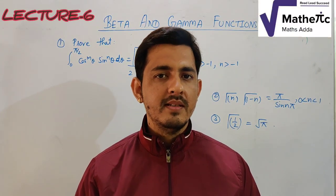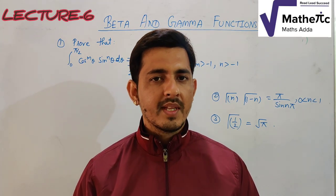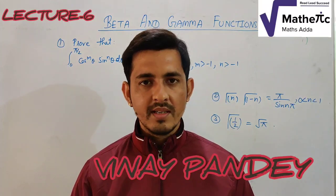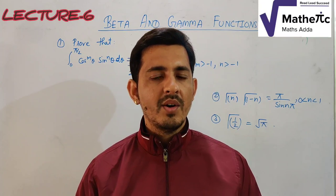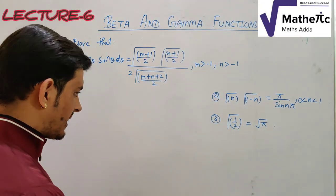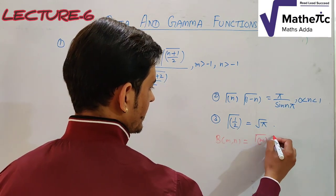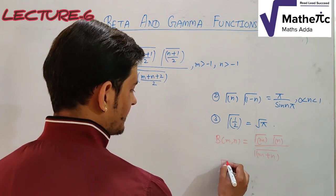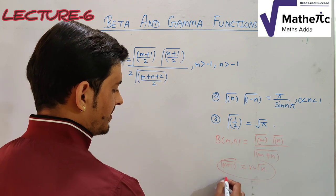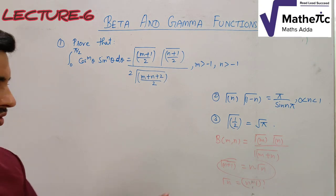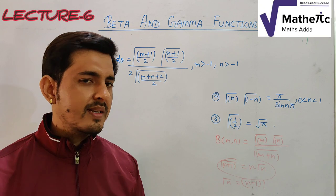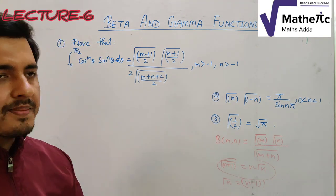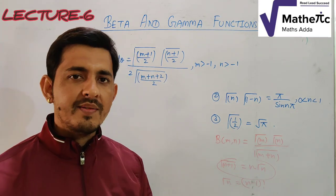A warm hello to all the learners of Methodic Math. Today we continue with integral calculus — beta and gamma functions. In previous videos we covered two forms of the gamma function, properties of the gamma function, the relation beta(m,n) = Γ(m)·Γ(n)/Γ(m+n), and that Γ(n+1) = n·Γ(n), and Γ(n) = (n-1)!. Links to those videos are in the description.